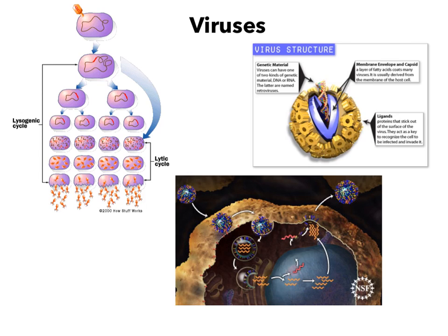Looking at the virus structure, as we have discussed this past week, viruses have a couple of main components. One is genetic material, whether that's DNA or RNA in a retrovirus — that's important, and you can see that lovely little strand of DNA sticking out right there. That little purple thing in the center is the capsid. The capsid is made of protein. That is something very important to note on your t-chart. And then we have our envelope on the outside — this yellow stuff, also referred to as the envelope. All structures we've talked about in class already.